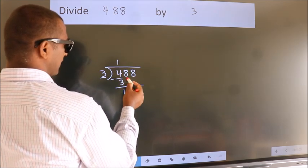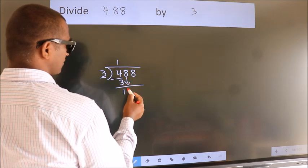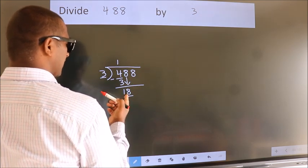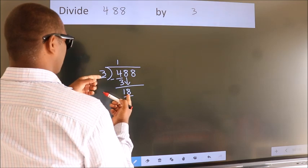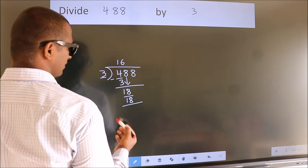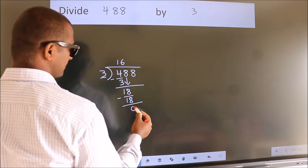After this, bring down the beside number. So, 8 down. So, 18. When do we get 18? In 3 table, 3, 6, 18. Now, we subtract. We get 0.